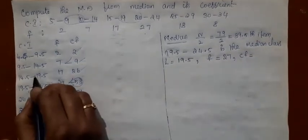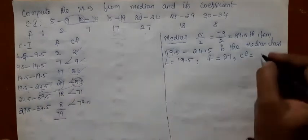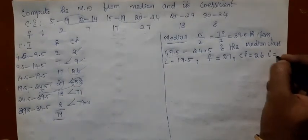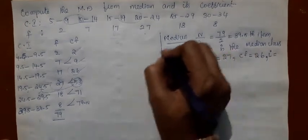CF is CF of pre-median class which is 26. I is the magnitude of the median class. The difference between these two numbers is 5.